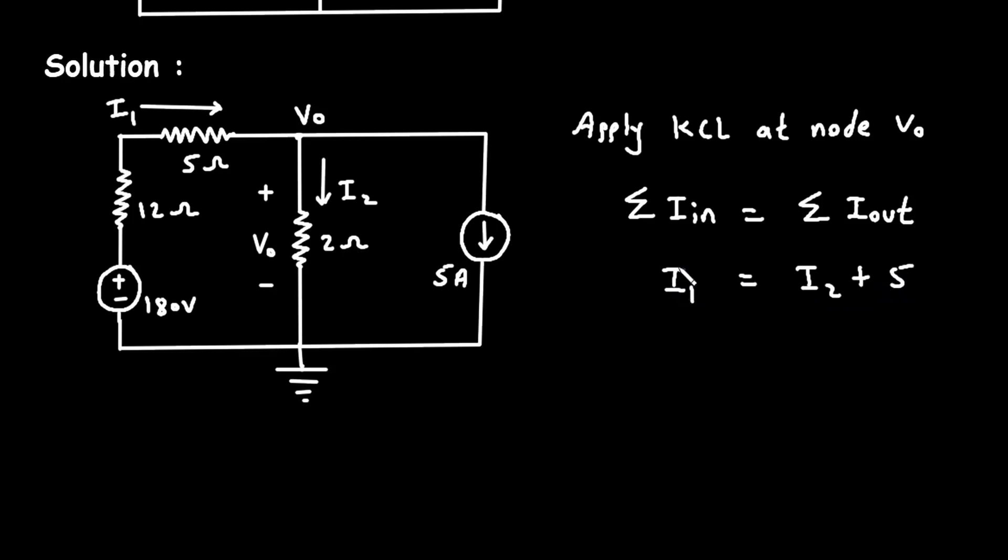We can rewrite this I1 as this voltage minus this voltage divided by resistance. So, 180 minus VO divided by resistance. We have to take total resistance. So, it will be 12 plus 5.